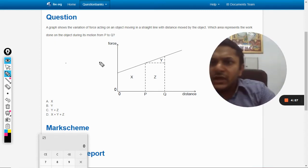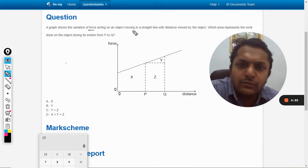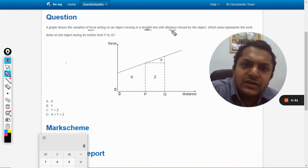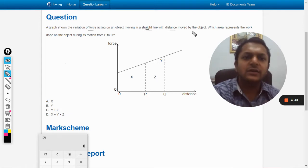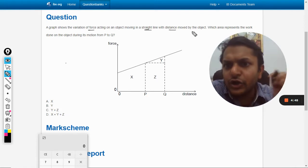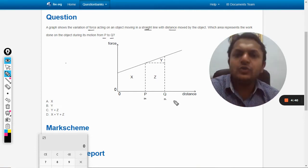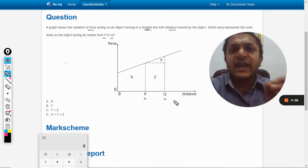In this question, a graph shows the variation of force acting on an object moving in a straight line with distance moved by the object. Which area represents the work done on the object during its motion from p to q? So the body is moving from p to q and you are supposed to tell which area under the curve represents the work that was done.